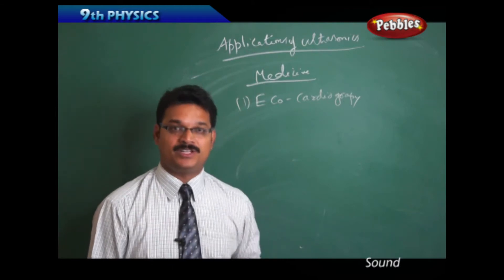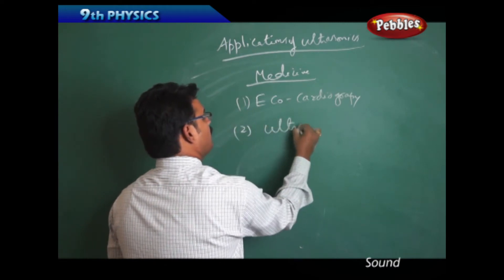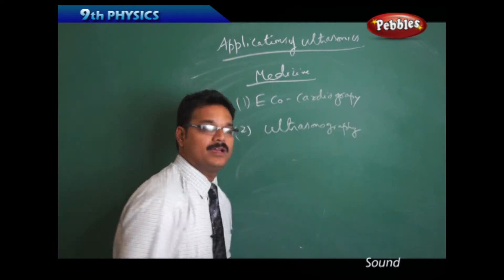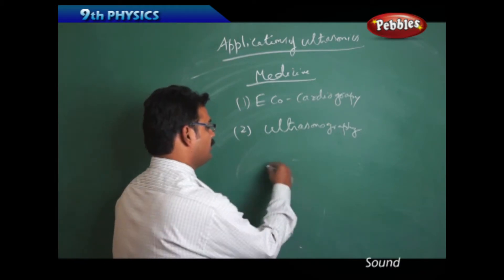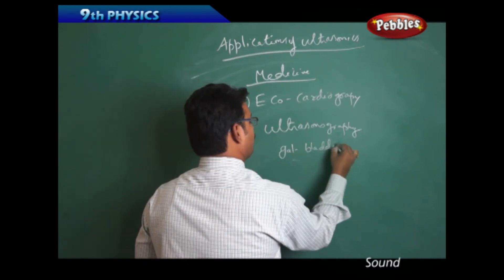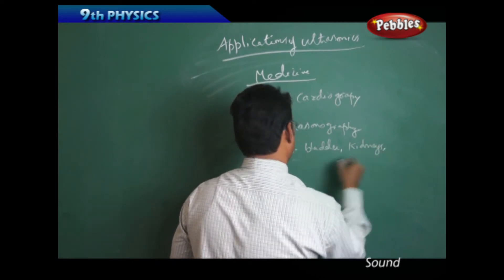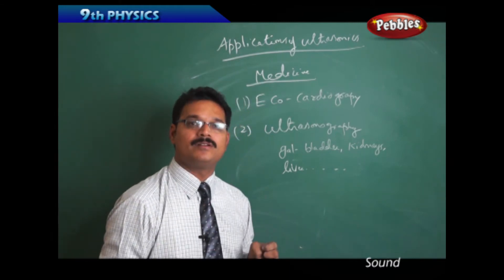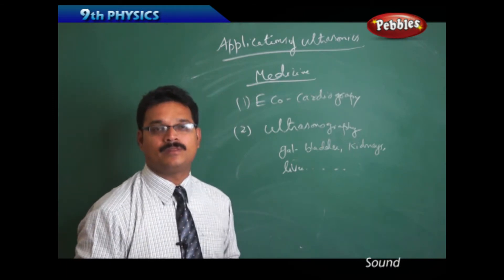They'll check how the heart is functioning, and that is called echocardiography. The second one is ultrasonography. Using ultrasonography, they will create images of organs of the human body like gallbladder, kidneys, liver, etc. They'll take the photograph and live image of the organs.